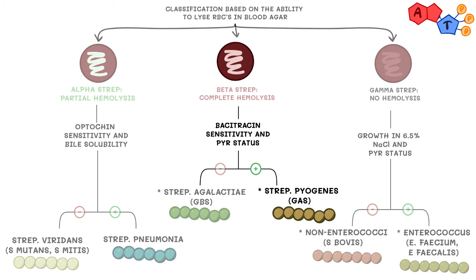By looking at this chart, we can safely say that Streptococcus pyogenes is beta-hemolytic, bacitracin-sensitive — which means it cannot survive in the presence of bacitracin — and PYR-positive. PYR stands for pyrrolidonyl aminopeptidase enzyme. Keep in mind that these features are important because they allow you to identify this organism in the lab or in exam questions.